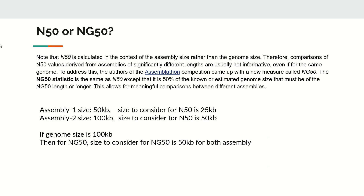The key question is: which is more useful — N50 or NG50? Consider two assemblies: one with size 50 KB and another with size 100 KB. For N50, we consider 25 KB and 50 KB respectively — these are incomparable thresholds. But if the genome size is 100 KB, NG50 always uses 50 KB as the threshold for both assemblies, regardless of assembly size. That is why assembly competitions like Assemblathon use NG50 rather than N50.